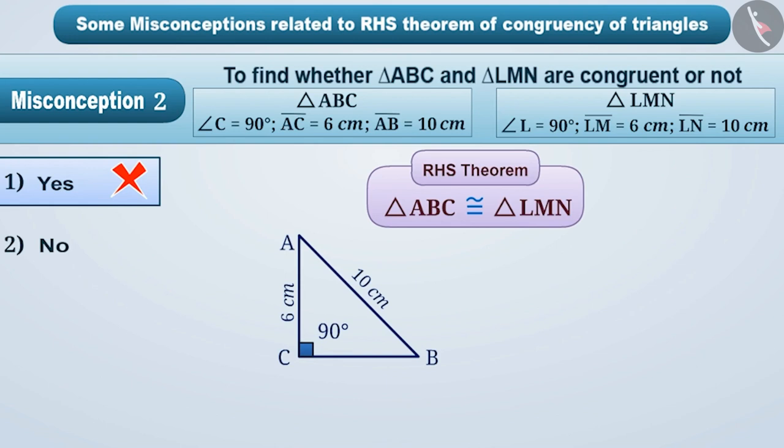So, AC is the side of triangle ABC and AB is the hypotenuse of triangle ABC. You can find it out by making a rough diagram.